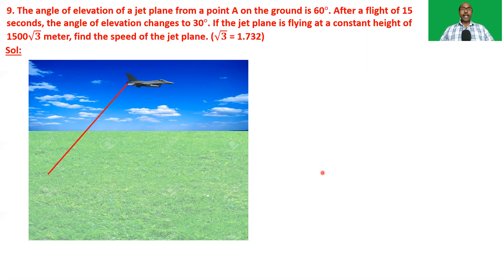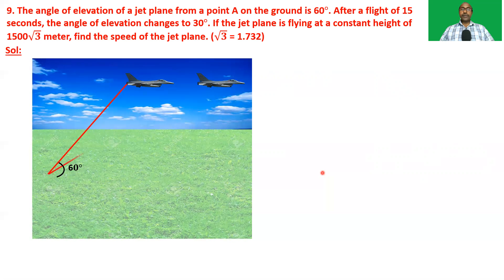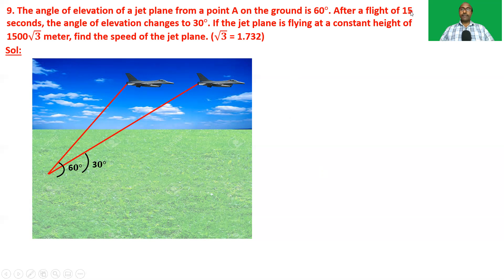The height of the jet plane — from point A the angle of elevation of the jet plane is 60 degrees, and after 15 seconds, flying some distance, the angle of elevation changes to 30 degrees. The jet plane is flying at a constant height of 1500√3 meters. The question is: what is the speed of the plane? We know that speed equals distance by time. Time is given as 15 seconds, so what is the distance traveled by the jet plane in 15 seconds?